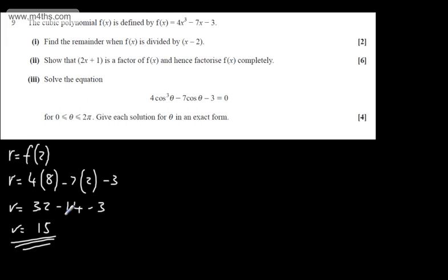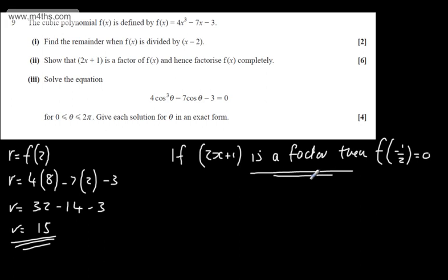In the second part for six marks, we need to show that 2x plus 1 is a factor of f(x) and hence factorize f(x) completely. I'm going to write if 2x plus 1 is a factor, then f of minus 1 half will equal 0. I'm going to use this property and show that if I evaluate minus 1 half through the function, we will get 0.